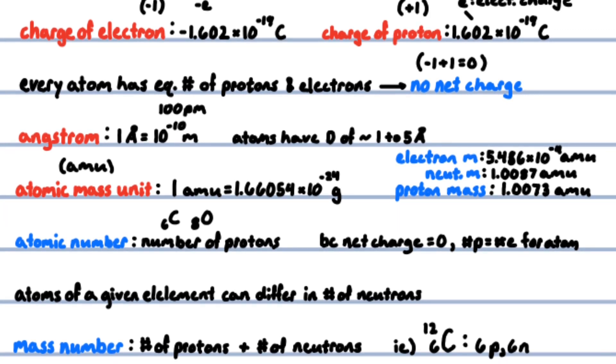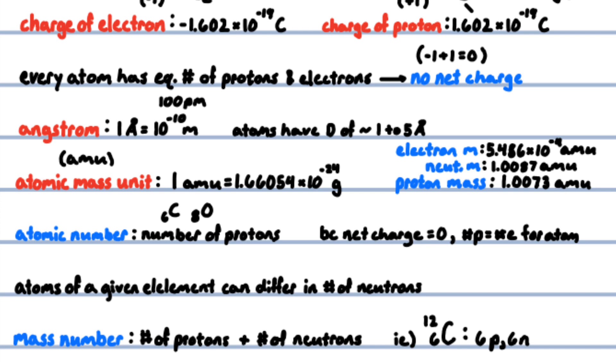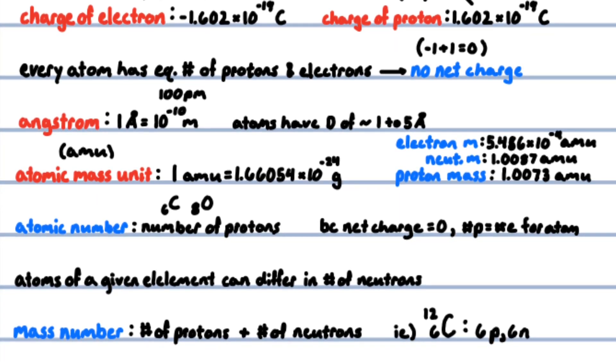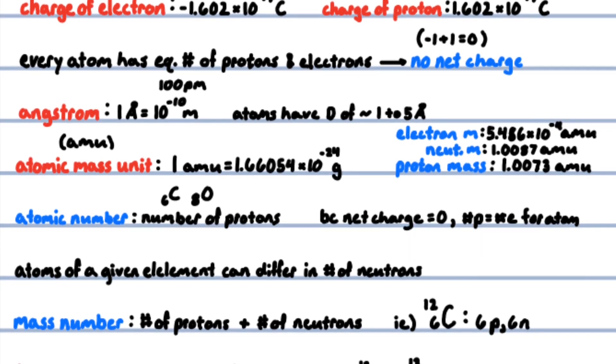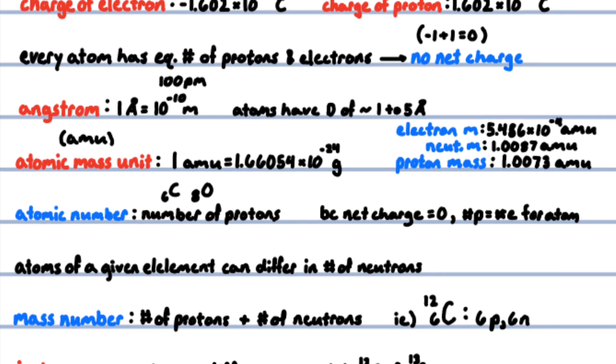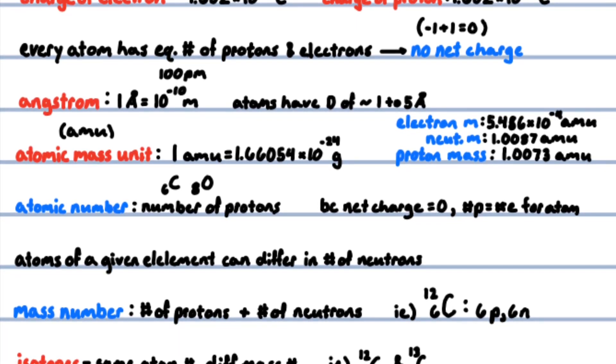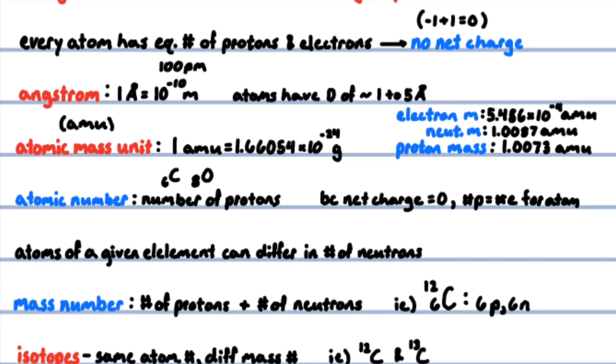A convenient unit of length is the angstrom: one angstrom equals 10 to the negative 10 meters, or 100 picometers. Atoms have a diameter of approximately one to five angstroms. The atomic mass unit, one amu, equals 1.66054 times 10 to the negative 24 grams. A proton has a mass of 1.0073 amu, a neutron 1.0087 amu, and an electron 5.486 times 10 to the negative 4 amu. Most of the atom's mass is in the nucleus—protons and neutrons—making it extremely dense.